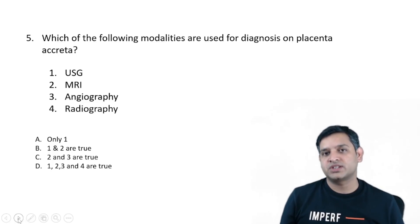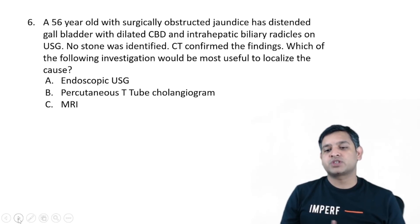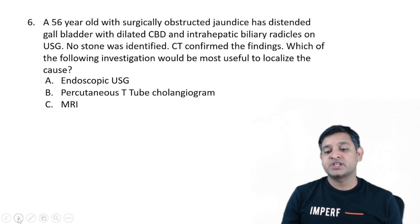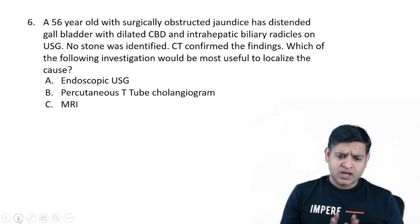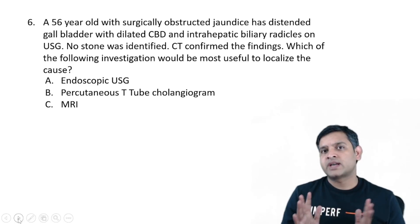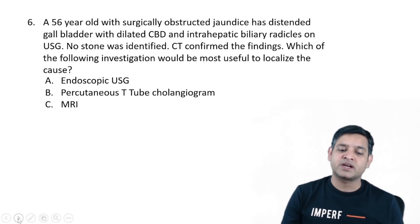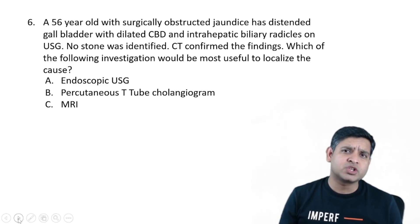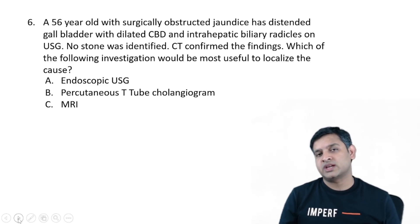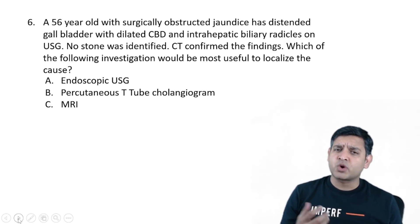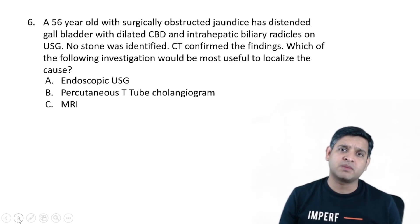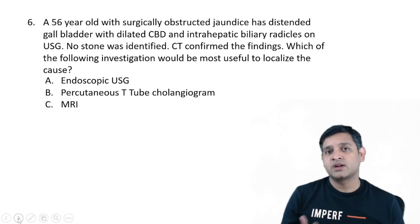A 56-year-old with surgically obstructive jaundice had a distended gallbladder, dilated CBD, and intrahepatic biliary radicals with no stone identified on ultrasound. CT confirmed the findings. The question asked which investigation would be most useful to localize the cause. The examiner seems to be pointing towards a diagnosis of peri-ampullary cancer. Choices included endoscopic ultrasound, percutaneous T-tube cholangiogram, and MRI — some people said ERCP was given, others said endoscopic ultrasound. If pointing toward peri-ampullary cancer, endoscopic ultrasound should be the best answer.